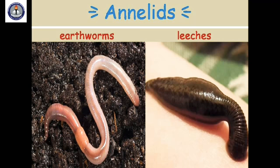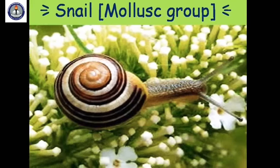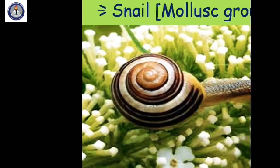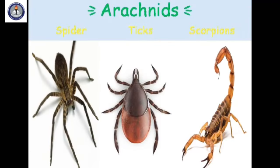Earthworms and leeches belong to a group of worms called annelids. They are soft, moist worms with rings around their bodies. We see snails and slugs in our garden. They have a kind of shell for protection. Like earthworms, they breathe through their skin. They belong to the mollusk group.